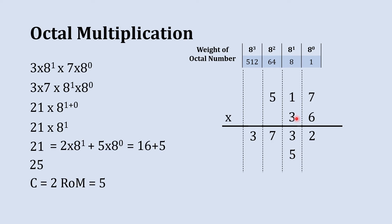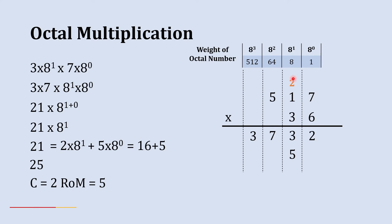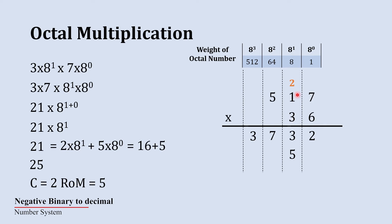We multiply this 3 with 7, and 2 will be carry forwarded to the next column. We leave the lower place blank as it is, and now we will jump to the next multiplication.